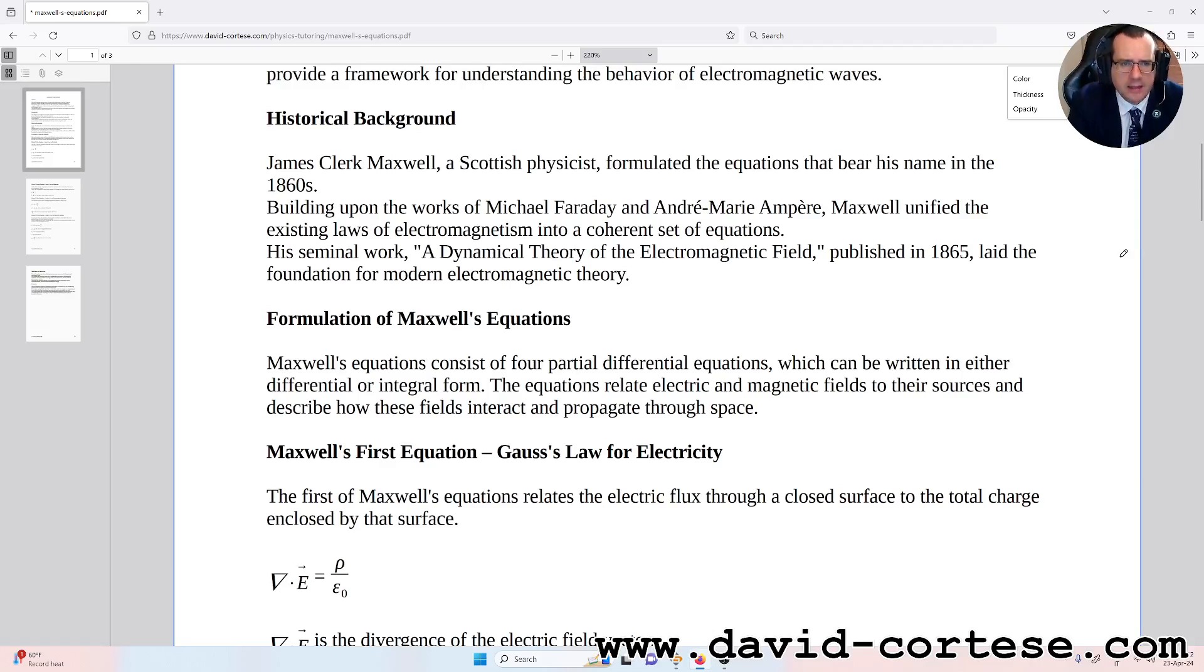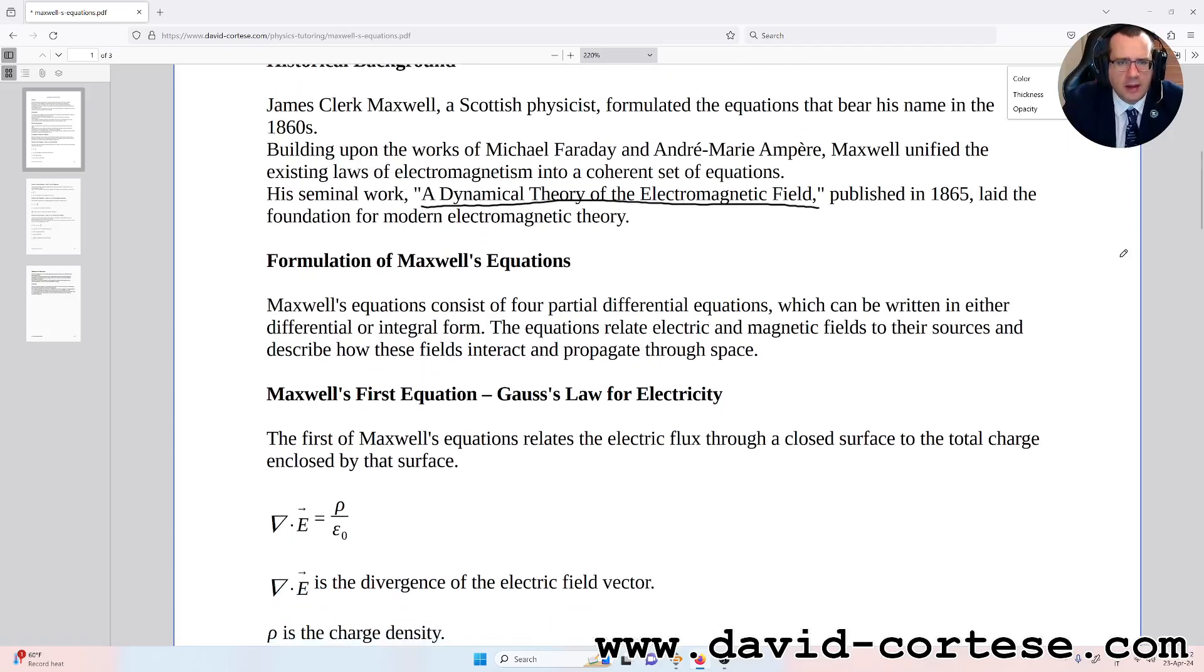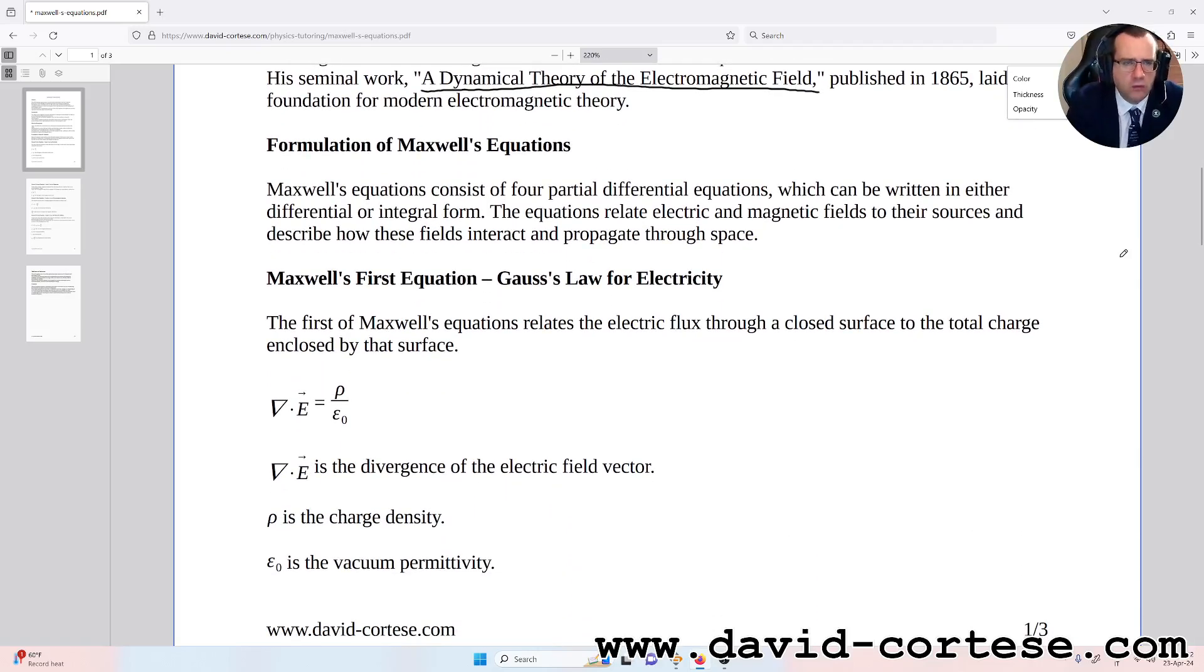His seminal work, A Dynamical Theory of the Electromagnetic Field, published in 1865, laid the foundation for modern electromagnetic theory. Formulation of Maxwell's equations: Maxwell's equations consist of four partial differential equations, which can be written in either differential or integral form. These equations relate electric and magnetic fields to their sources and describe how these fields interact and propagate through space.